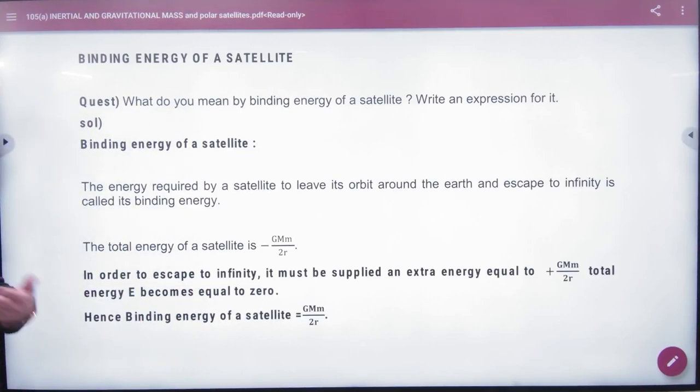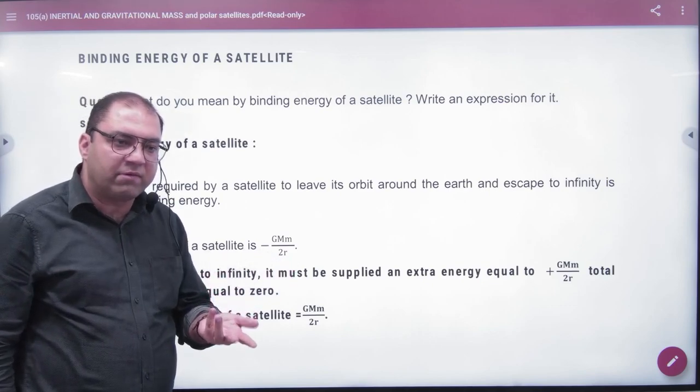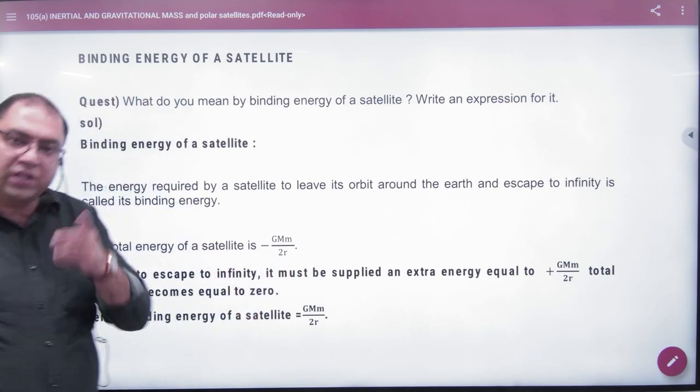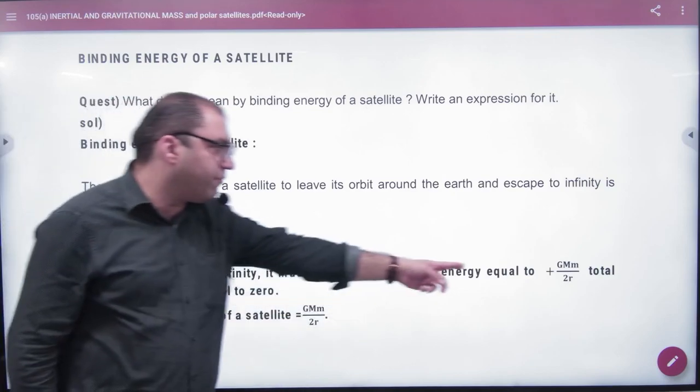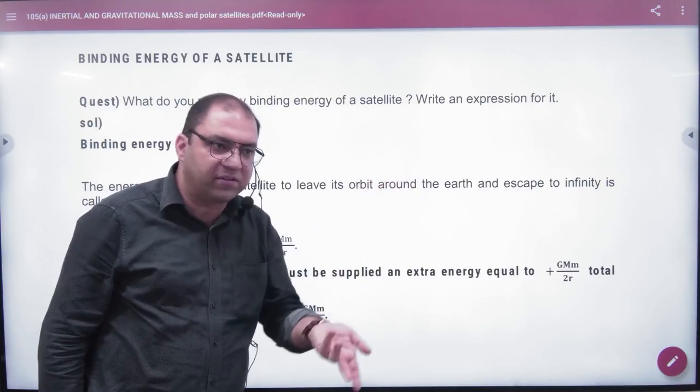When a satellite is flying in the orbit at smaller distance, total energy is how much? Minus GMm by 2R. You need to give that energy in the positive, so total energy is zero because at infinite distance it is zero.